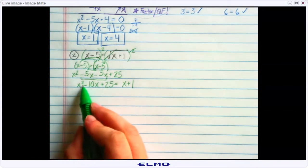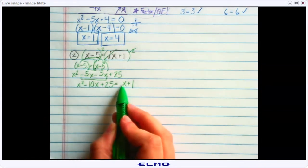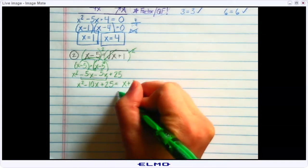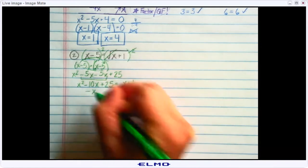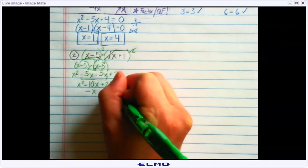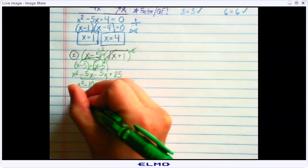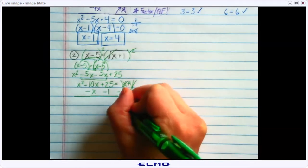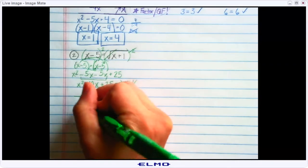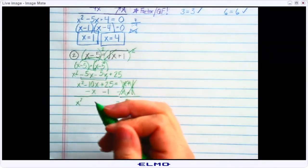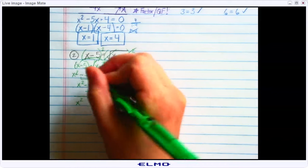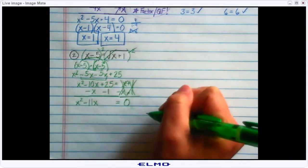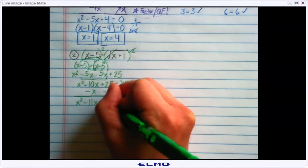Now we have a quadratic with x squared, so one side needs to equal 0. The easiest way is to get rid of the stuff on the right side: subtract x and give it to that like term, then subtract 1 and give it to that like term. Be careful: negative 10x minus x is negative 11x, and positive 25 minus 1 is positive 24. So I end up with x squared minus 11x plus 24 equals 0.